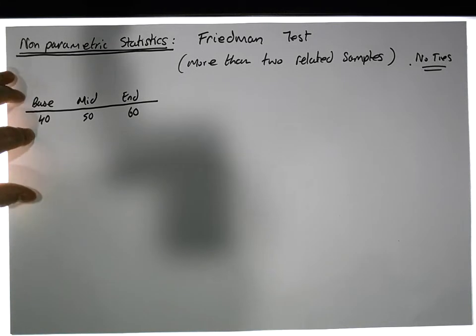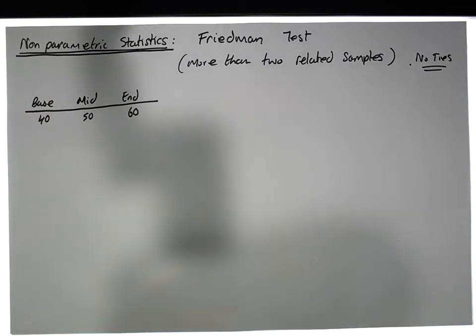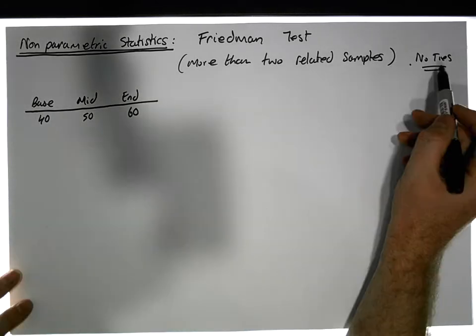Otherwise it gets more complicated when we have ties, and there's a correction factor that has to be taken into consideration. So let's just keep it simple at this stage and do the no ties scenario.